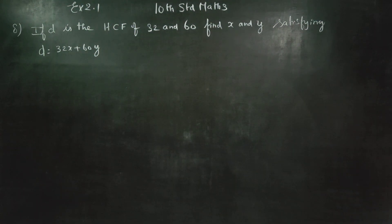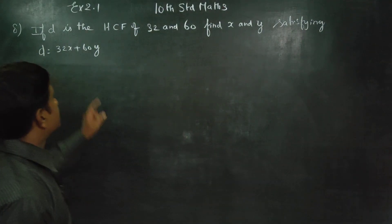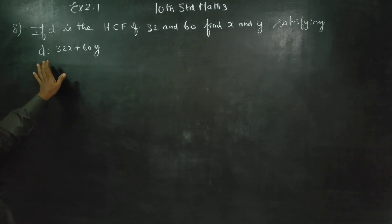Dear 10 standard students, I am Metro Karnagaran. In exercise number 2.1, sum number 8: If D is the HCF of 32 and 60, find X and Y satisfying D equals 32X plus 60Y.